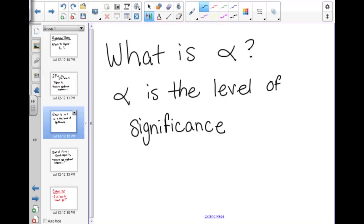Well, what is alpha? Alpha is the level of significance. Every problem will tell you there is a significance level of .10, .05—that's what you're basing P off of.